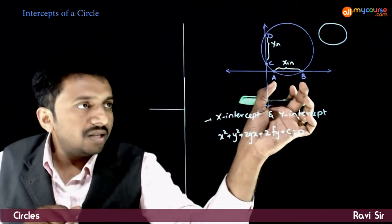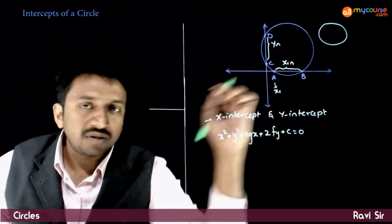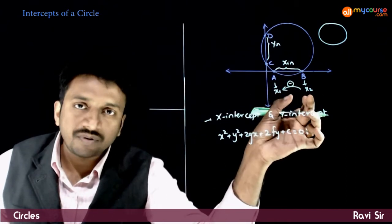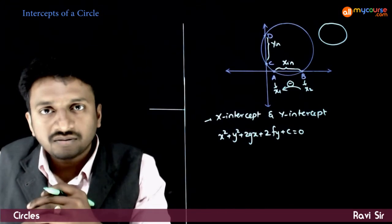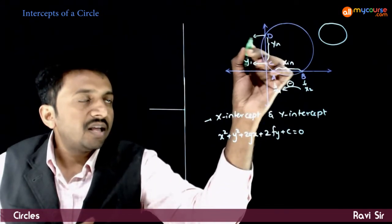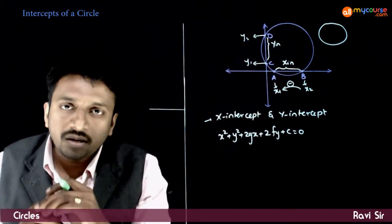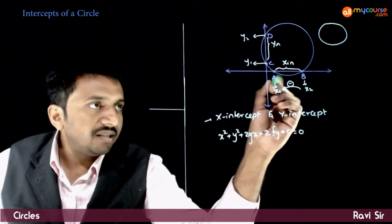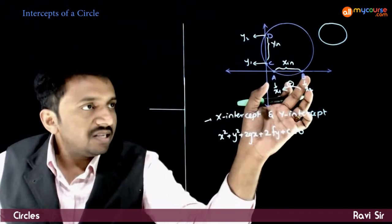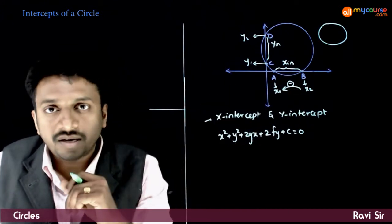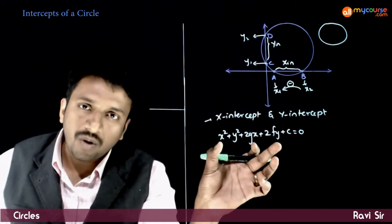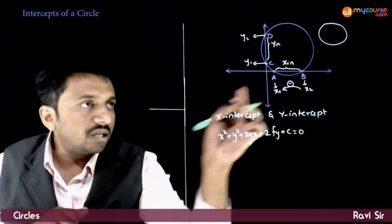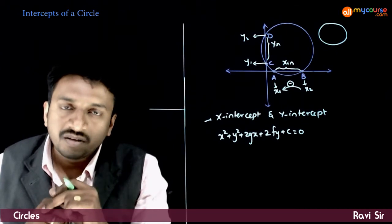To find the x-intercept, I find the x-coordinates of the first and second points where the circle cuts the x-axis, and subtract one from the other to get the length AB. Similarly, finding y1 and y2 and their difference gives the y-intercept. To find the x-intercepts, these are the points where the y-coordinate is zero, so we substitute y = 0 into the equation. Points on the x-axis are of the form (x, 0).